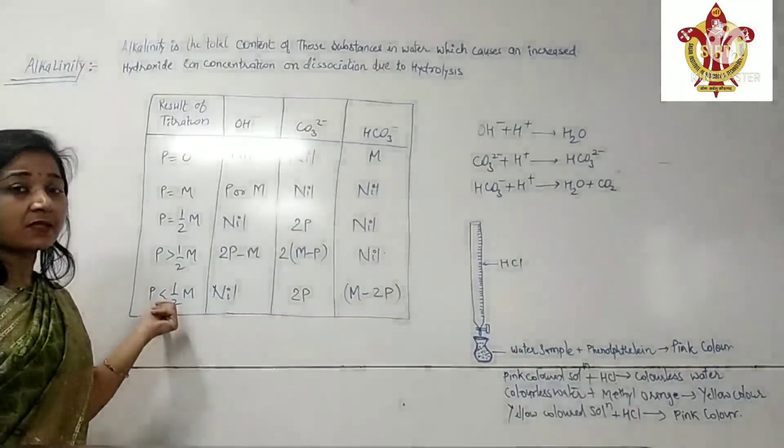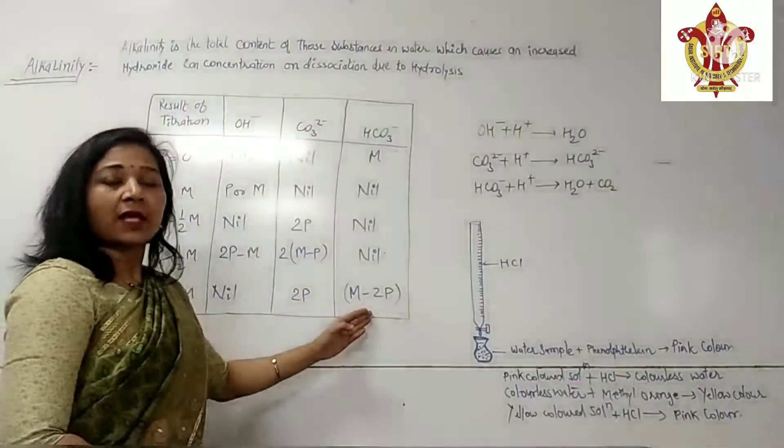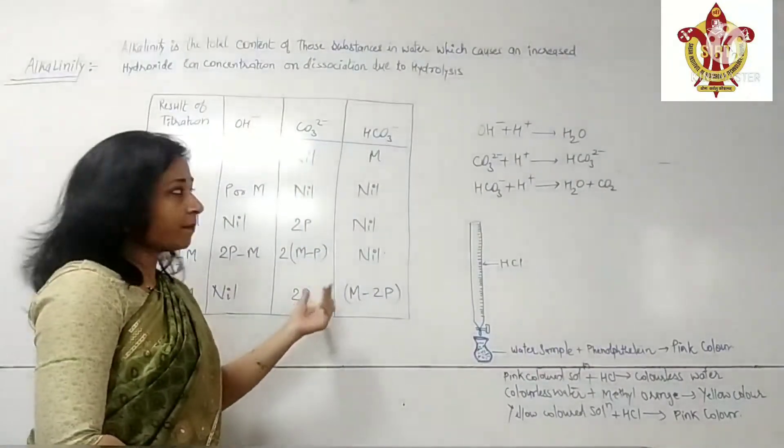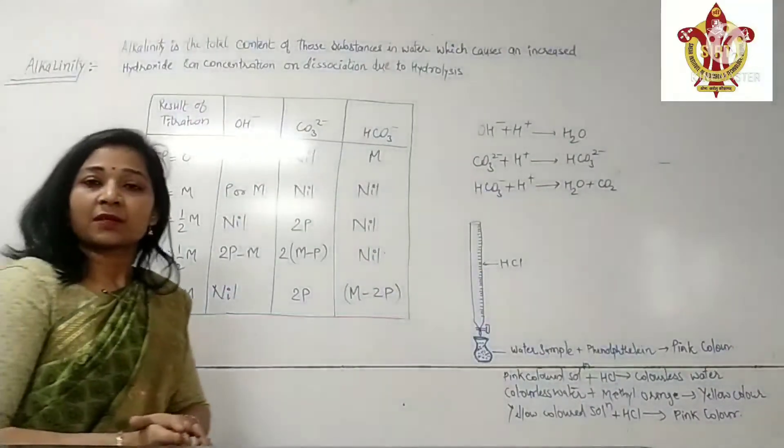At the last, when P is less than half M, only carbonate and bicarbonate ions are present. The value of carbonate ion is 2P and bicarbonate ion is M minus 2P, and hydroxide ion is absent.